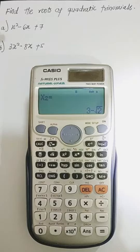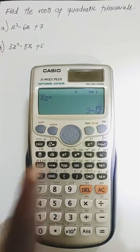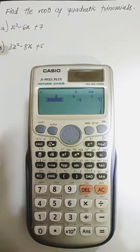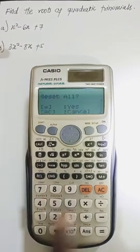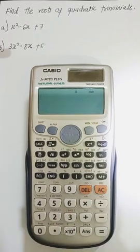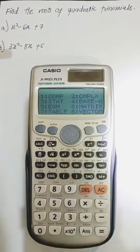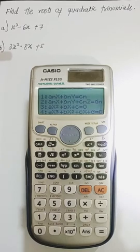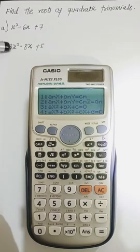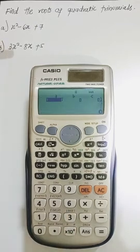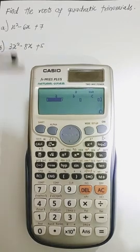So let's do the b. It's already there, I can decide to just clear the memory and then start the whole thing again. So I said you press the MODE, then you go to the fifth one, that is equation. Then this type of equation is a quadratic trinomial, that is the third one. So you press three, then it will go to the quadratic equation mode.